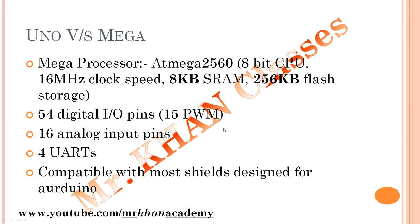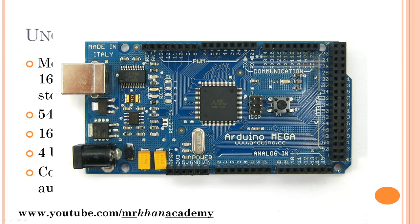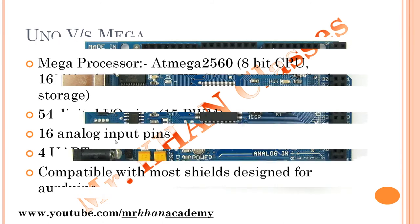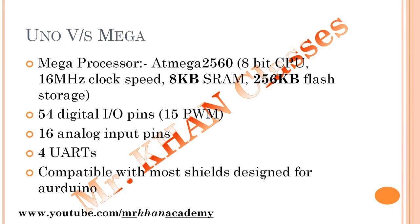The Mega uses the ATmega2560 chip, which is also an 8-bit CPU with the same 16 MHz clock speed, but has 8 KB of RAM and 256 KB of flash storage. It has a total of 54 digital input/output pins (0 to 53), compared to 14 on the UNO. The Mega is physically larger because of the extra pins and memory. It also has 16 analog input pins instead of 6, plus 4 UARTs, and is compatible with most shields designed for Arduino.